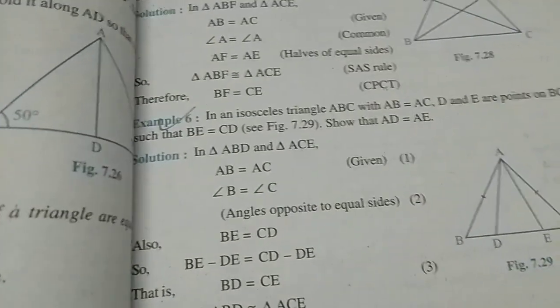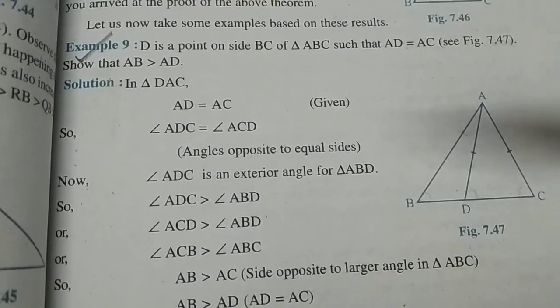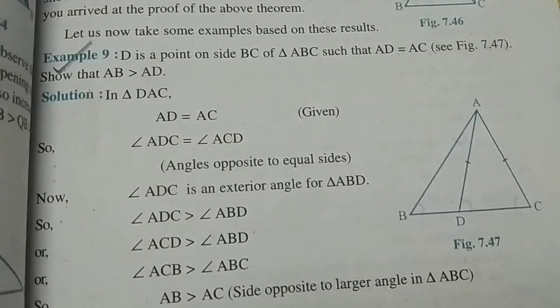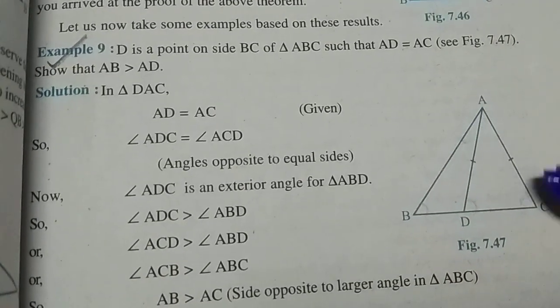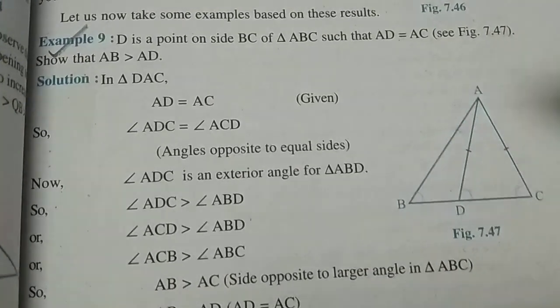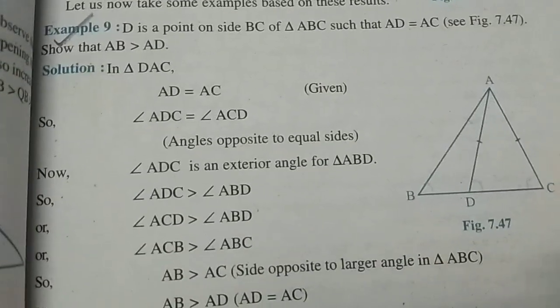From chapter Triangles, you have Example 5 and Example 6. These both are important. You also have this Example 9: D is a point on side BC of triangle ABC such that AD equals AC. Show that AB is greater than AD. Do practice this freely. This is sometimes asked in the exam for four marks.